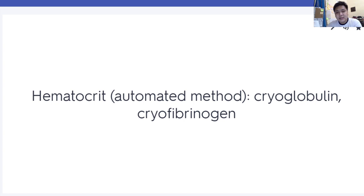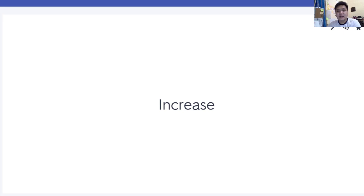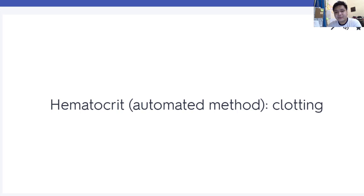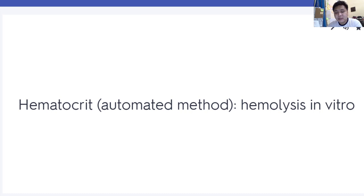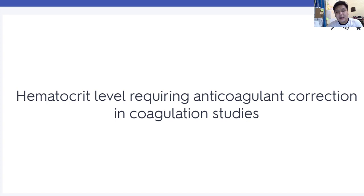Hematocrit is increased in the presence of cryoglobulin, cryofibrinogen, giant platelets, high WBC count, or hyperglycemia greater than 600 mg per deciliter. Hematocrit is decreased in autoagglutination, clotted samples, hemolysis in vitro, and in the presence of microcytic RBCs. Hematocrit level requiring anticoagulant correction in coagulation studies is 55%.